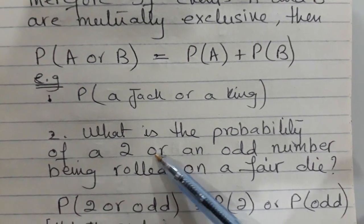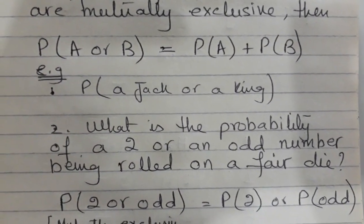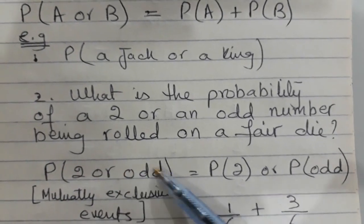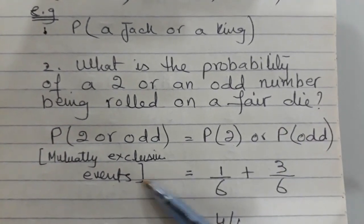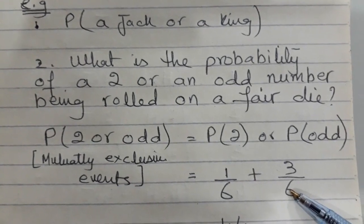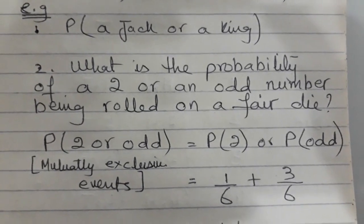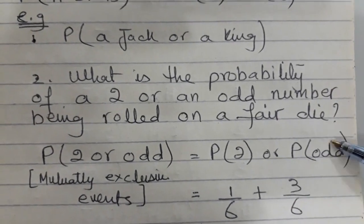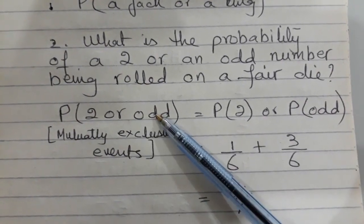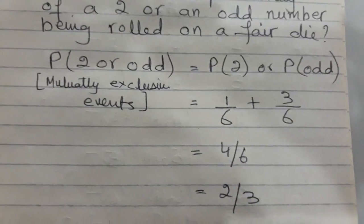Another example: what is the probability of rolling a 2 or an odd number on a fair die? It is not possible to roll both a 2 and an odd number at the same time, so these are mutually exclusive events. P(2) = 1/6, since only one face shows 2. P(odd) = 3/6, since the odd numbers on a die are 1, 3, and 5. Adding them: P(2 or odd) = 1/6 + 3/6 = 4/6 = 2/3.